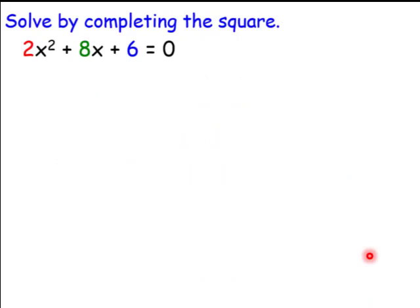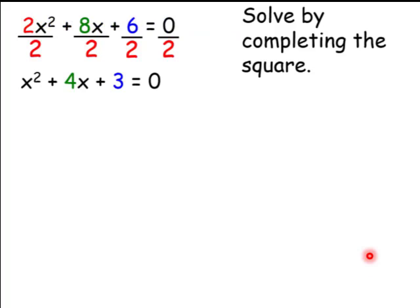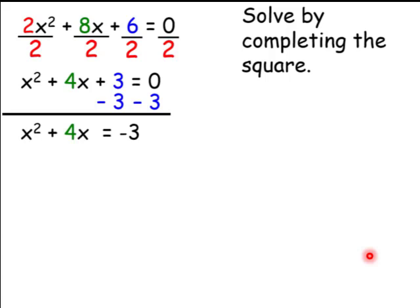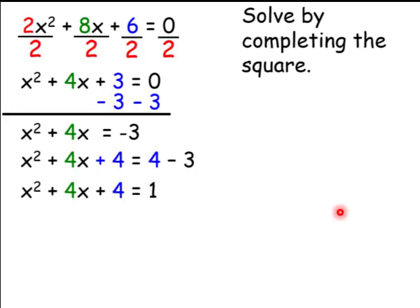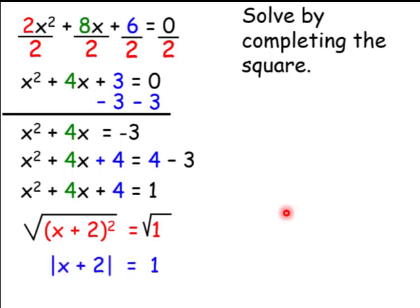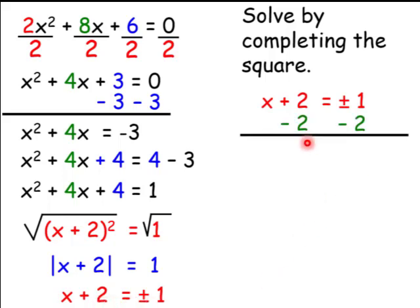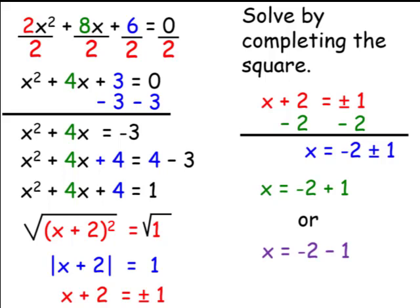Let's follow the steps. First, we'll divide through by a. Second, we'll write it in the form x squared plus bx equals c by subtracting 3 from both sides. Next, we'll take half of b and square it. Half of 4 is 2; 2 squared is 4, and we'll add that to both sides. Step 5: factor the perfect square trinomial. Step 6: take the square root of both sides. We're left with x plus 2 equals plus or minus 1. All we have to do is subtract 2 from both sides, giving us x equals negative 2 plus or minus 1. Our two answers are negative 2 plus 1 or negative 2 minus 1, which is negative 1 or negative 3.